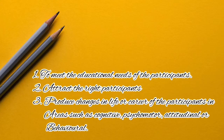In Hansen's book, he rules out that there are aims of adult and continuing education. The aims are: number one, to meet the educational needs of the participant or clientele; number two, to attract the right participants; and number three, to produce changes in life and career of the participant in areas such as cognitive, psychomotor, and attitudinal and behavioral aspects of the participants.